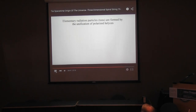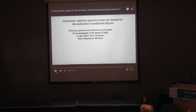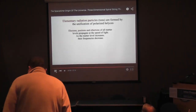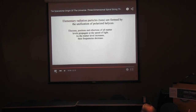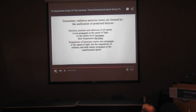Elementary radiation particles — tones — are formed by the unification of polarized helices. Electrons, positrons, and ethertrons of all matter levels propagate at the speed of light. As the matter level increases, their frequencies decrease. Cingulatrons of harmonic matter also propagate at the speed of light, while the cingulatrons of ordinary and dark matter propagate at superluminal speed. As the matter level increases, their frequencies increase.